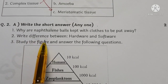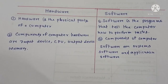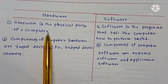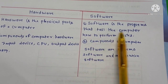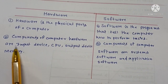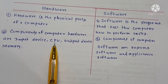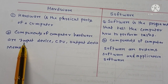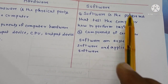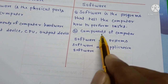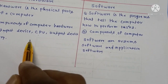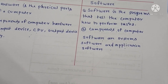Question 2b: Write the difference between hardware and software. Hardware is the physical part of a computer; software is the program that tells the computer how to perform tasks. Components of computer hardware include input device, CPU, output device, and memory. Components of computer software are system software and application software — so hardware has four types of components and software has two types.